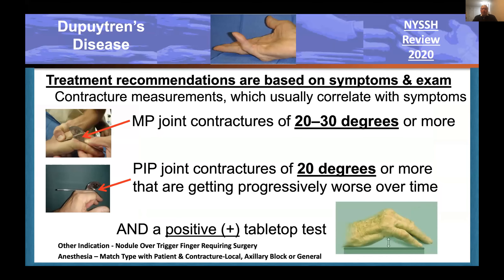Surgical indications include contractures of a certain degree. For MP contractures, I usually look at 20 to 30 degrees before saying therapeutic intervention is appropriate. For PIP contractures, 20 degrees and evidence that they're progressing. It used to be written that any PIP contracture was a surgical indication, but I've seen particularly some women with a 10-degree contracture who had no real symptoms and never got worse, so it didn't seem appropriate to operate unless it progressed.